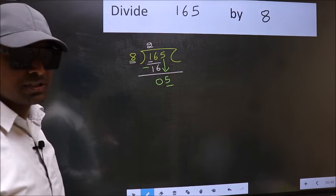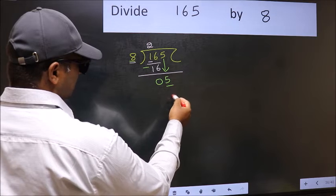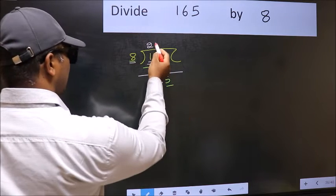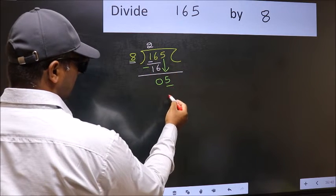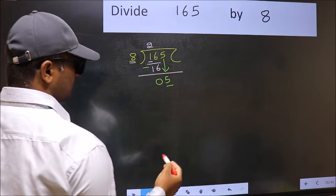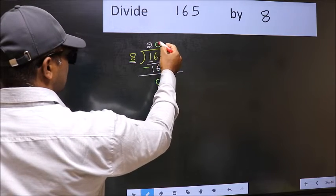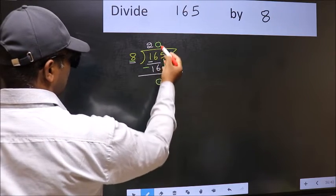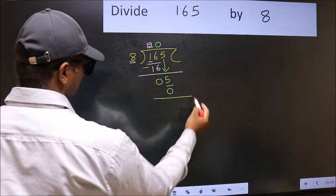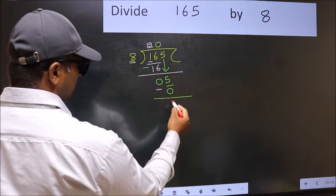Instead, what you should think of doing is which number should we take here. If I take 1, I will get 8. But 8 is larger than 5. So what we should do is we should take 0. So 8 into 0 is 0. Now you should subtract. 5 minus 0, 5.